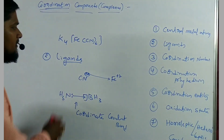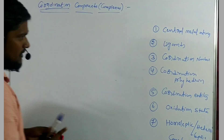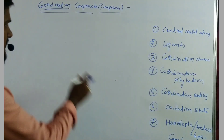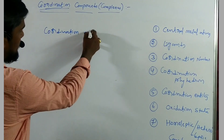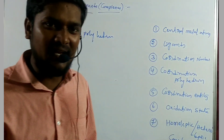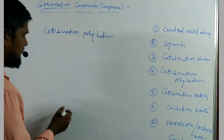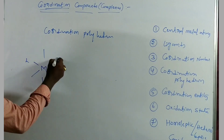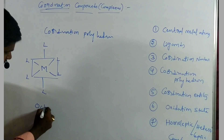The third term is coordination number. Based on the number of ligands present in the complex, the coordination polyhedron is defined. The best coordination polyhedrons are octahedron — having six ligands — and this is the octahedral complex.